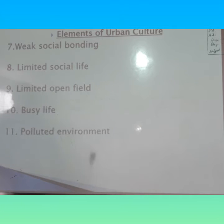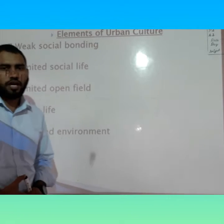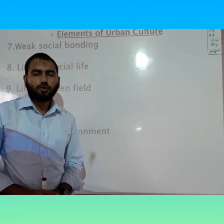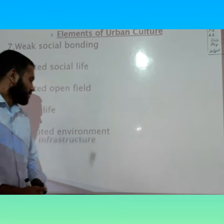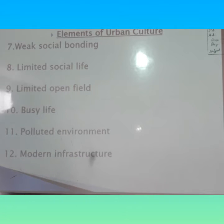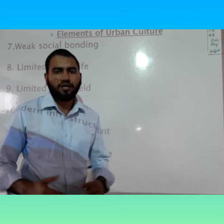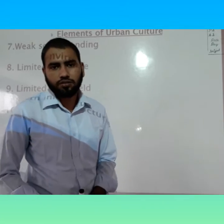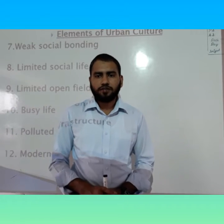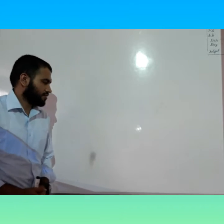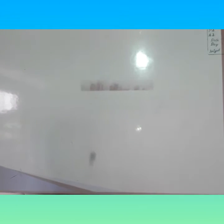Number eleven, polluted environment — urban environment is more polluted than the rural environment. Number twelve, modern infrastructure — such as wide roads, overpasses, flyovers, gas, and electricity. These are the elements of urban culture.